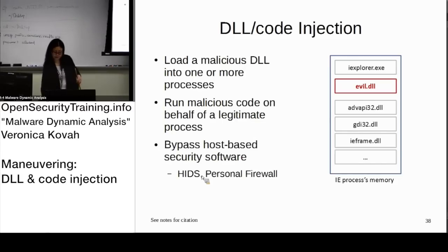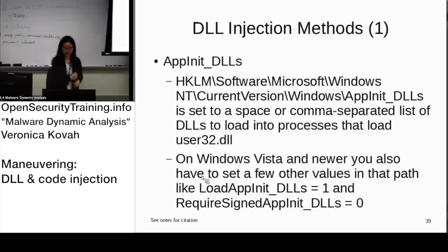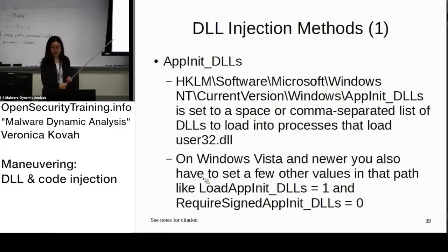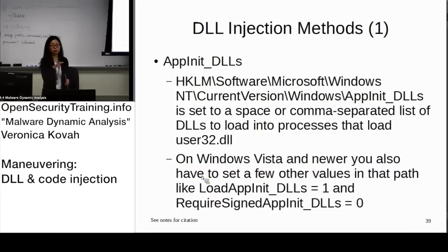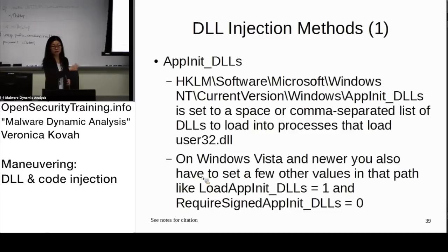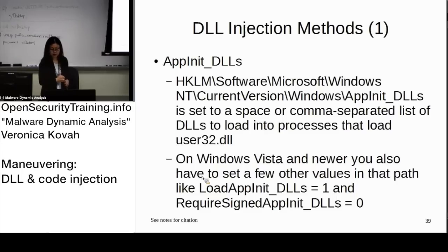One method uses the AppInit_DLLs registry key. I briefly mentioned this yesterday. You can specify a number of DLL names there, and Windows is supposed to load every DLL listed in AppInit_DLLs for every process that uses user32.dll. So AppInit_DLLs is a good place where malware can list its DLL in the registry key.